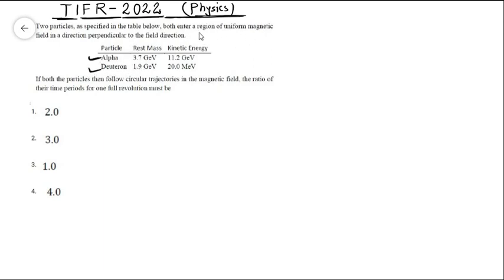Both enter in a uniform magnetic field perpendicular to the direction of the field. They both move in circular trajectories and we need to find the ratio of the time period of one full revolution.